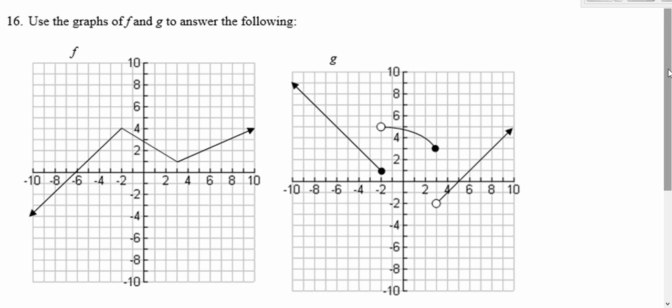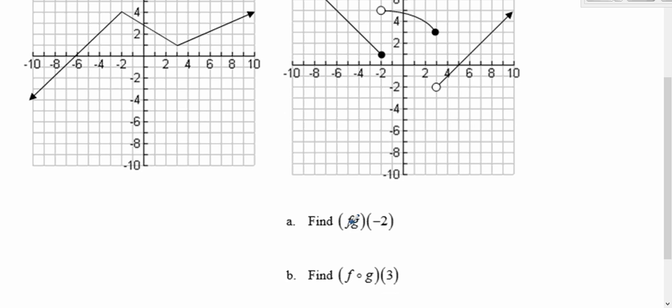All right, so we're going to use the graphs to get f times g of negative 2. So we need to know what f of negative 2 is and g of negative 2, and then we're going to multiply the answers together.